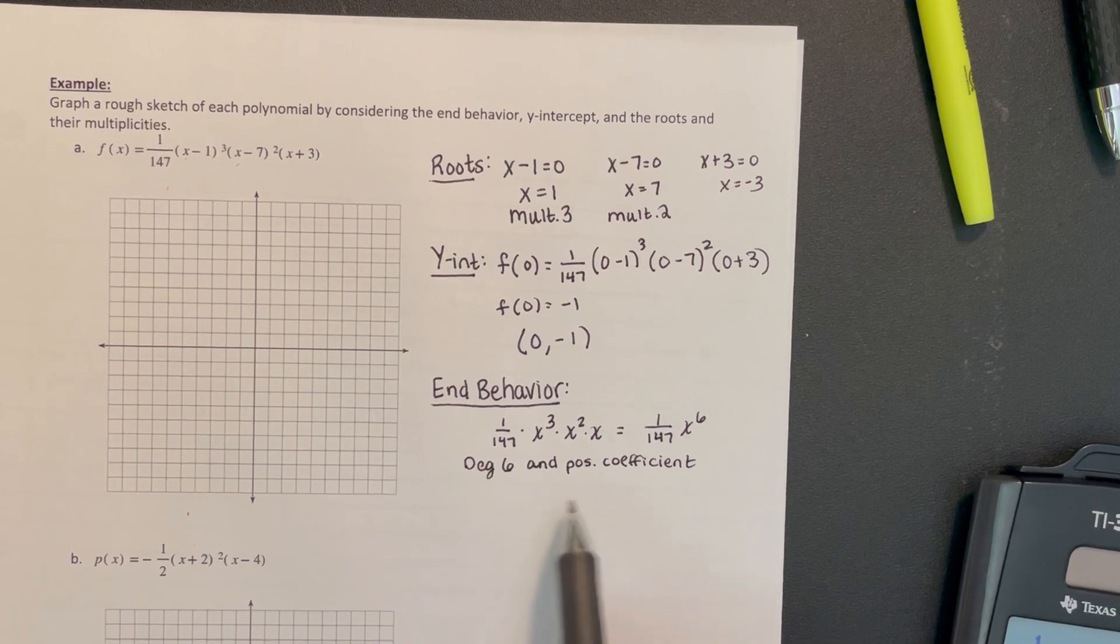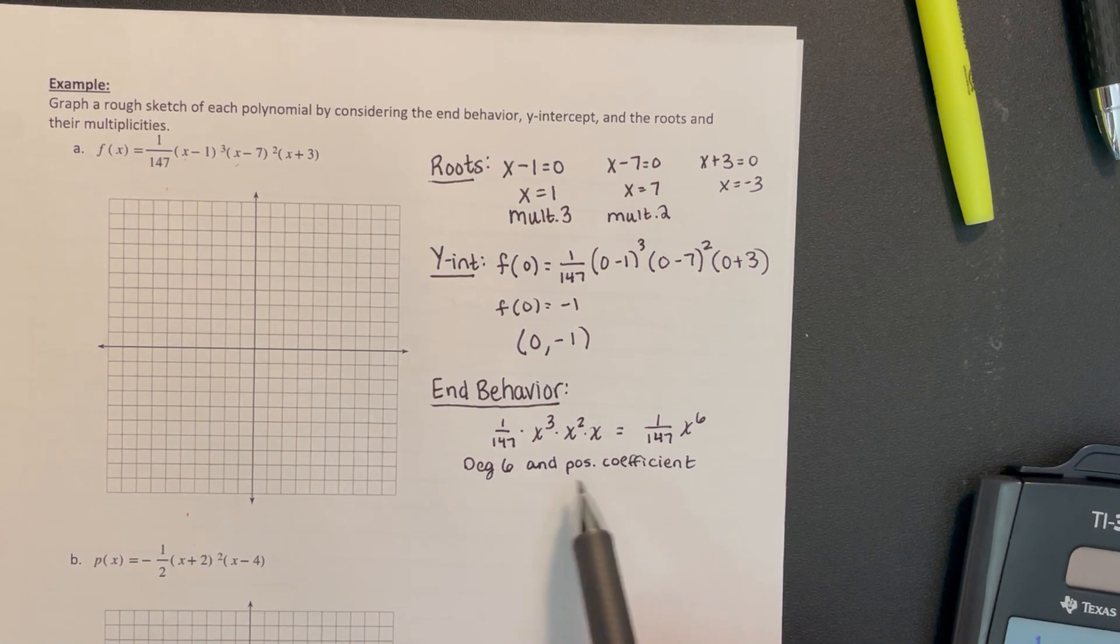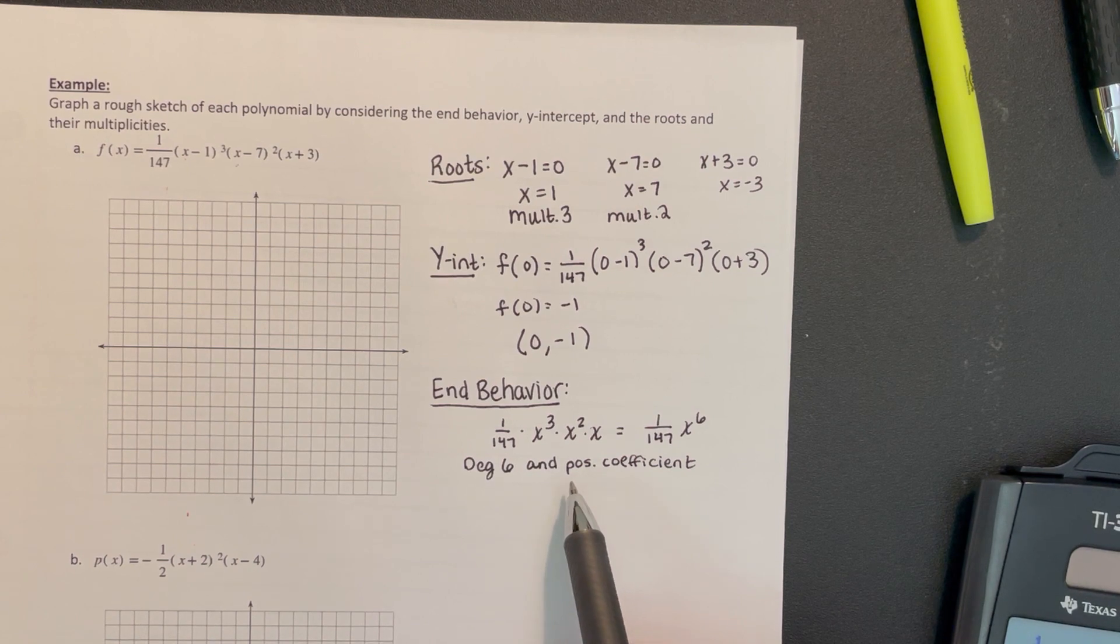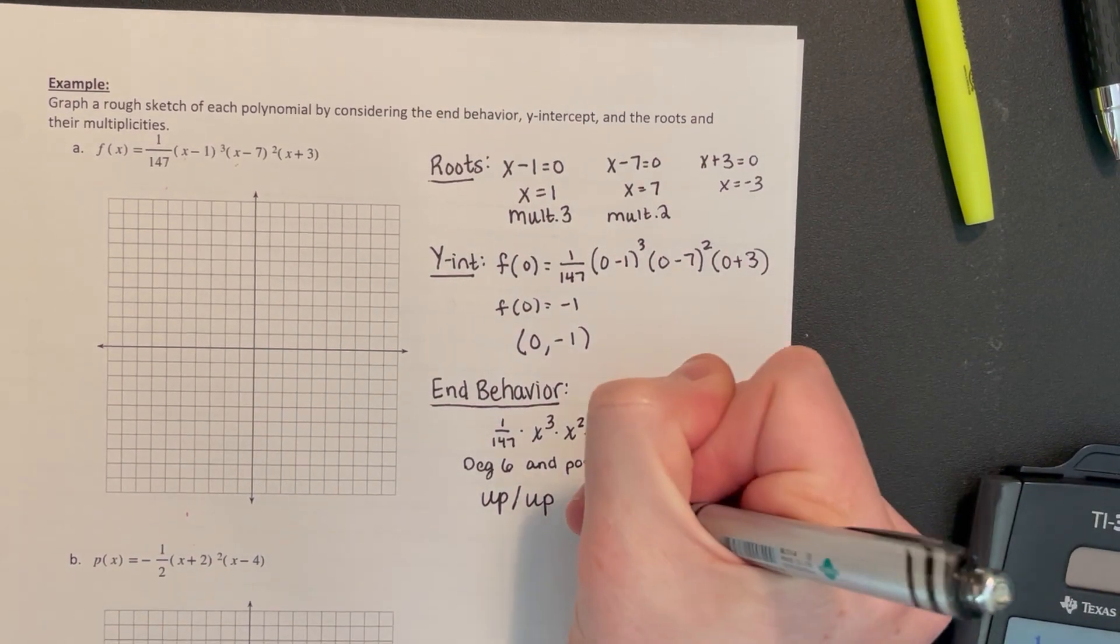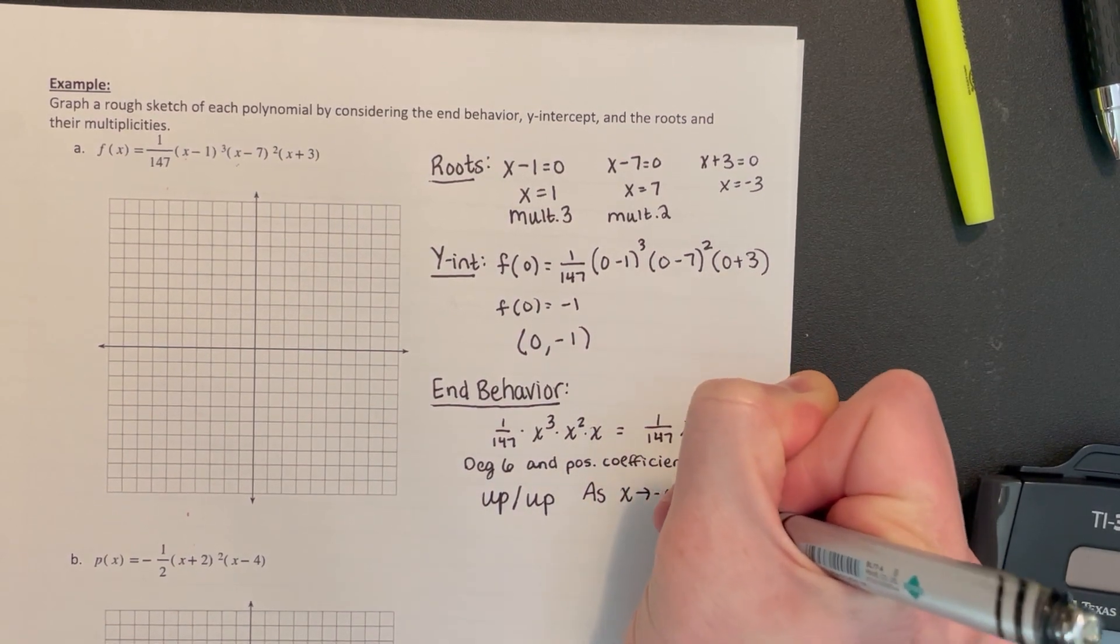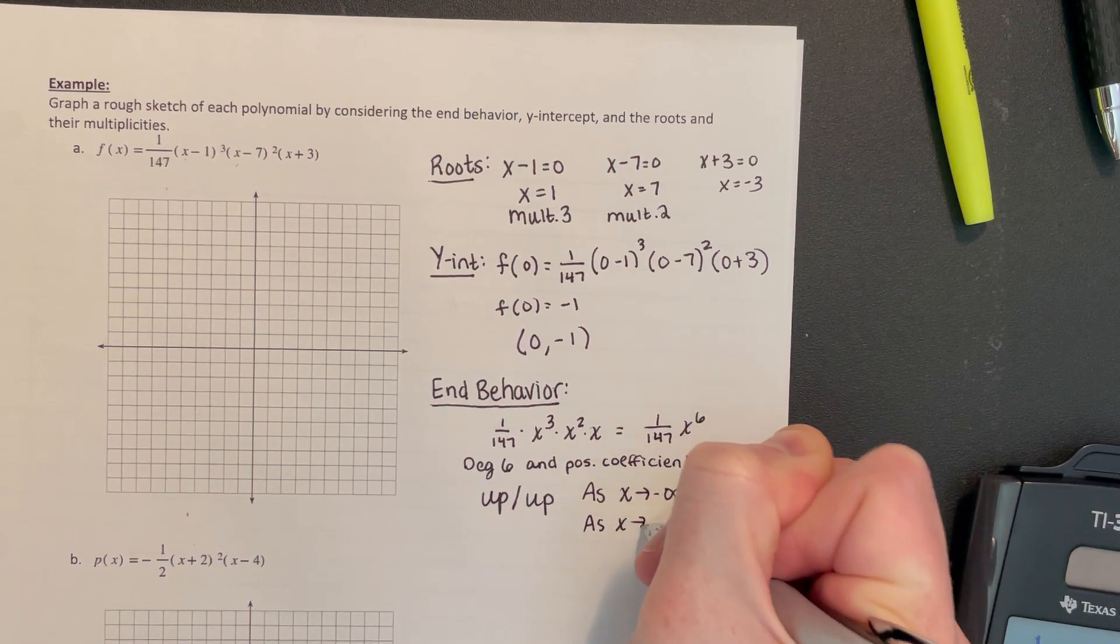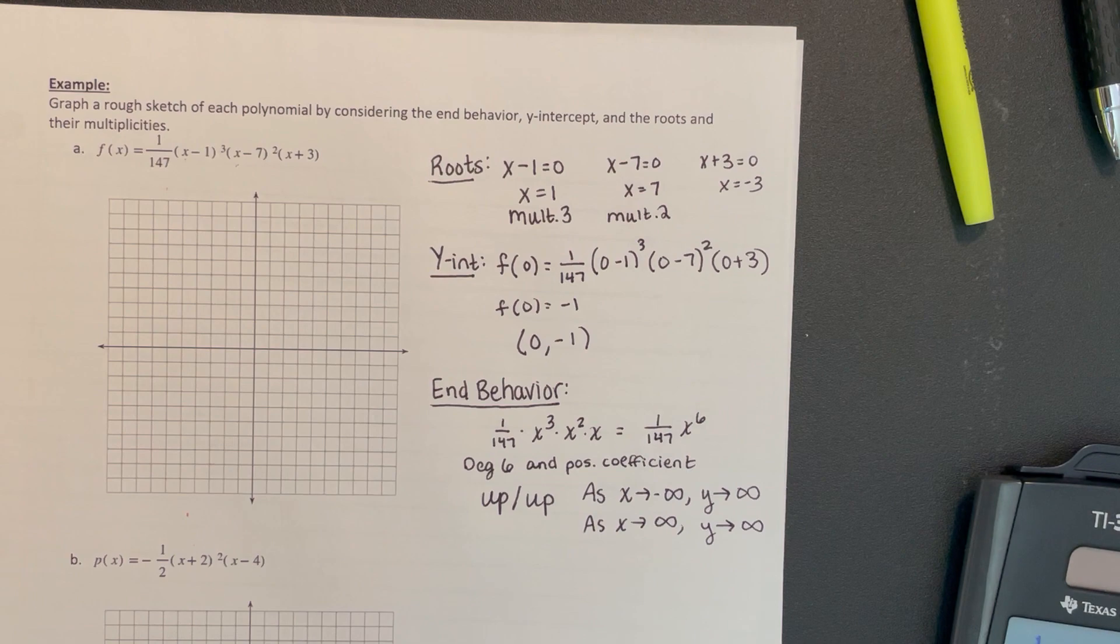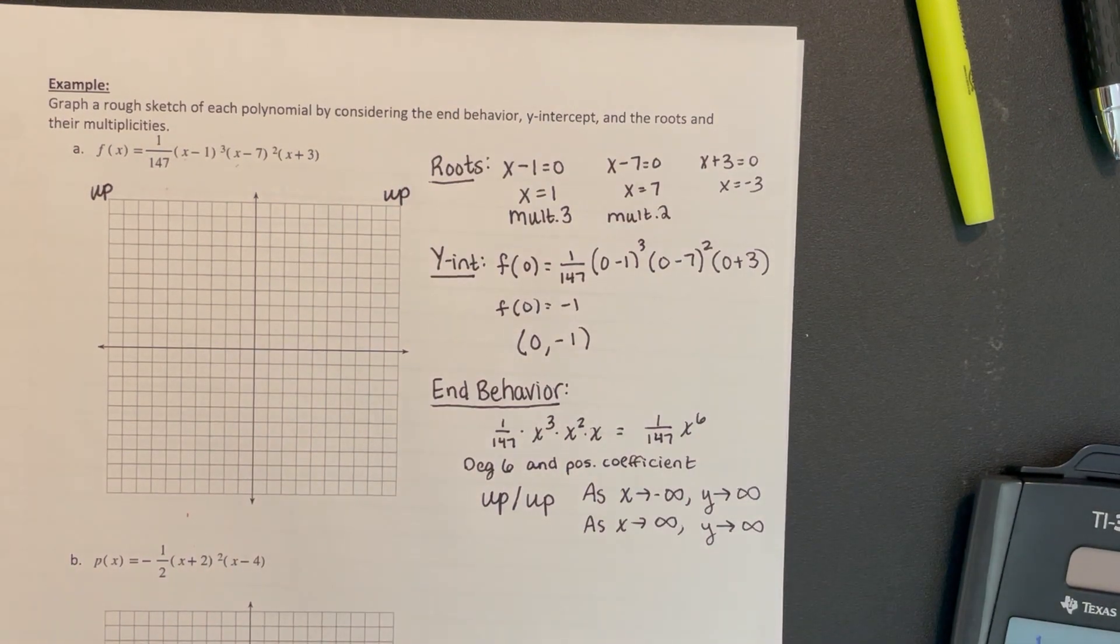In that previous lesson, we talked about end behavior and how it would change based off the degree, if it was even or odd, and if the leading coefficient was positive or negative. Even degrees look like quadratic functions as far as the end behavior goes. When a quadratic has a positive coefficient, we're pointing up, up. So our end behavior is up, up. The formal way is: as x goes to negative infinity, y goes to positive infinity. And as x goes to positive infinity, y is still going up to positive infinity.